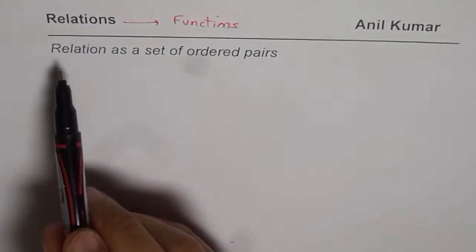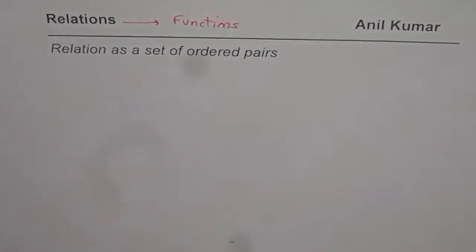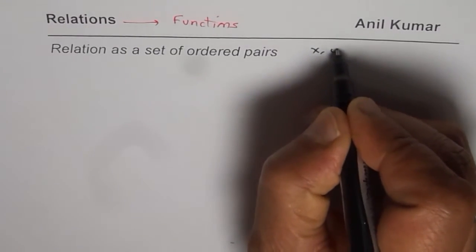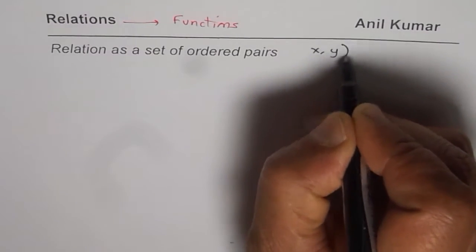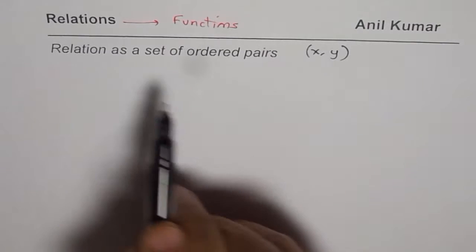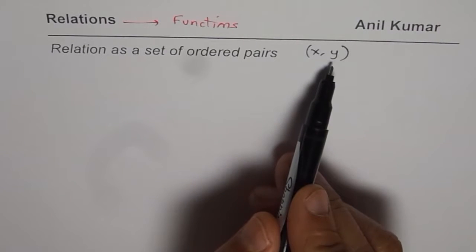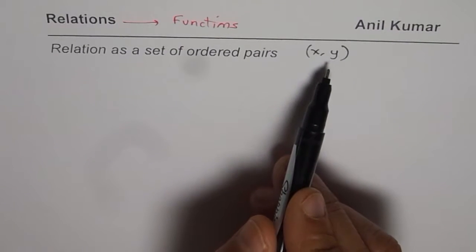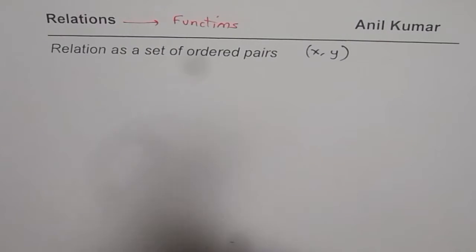As you know, relations could be represented as a set of ordered pairs. Taking ordered pairs is very important and easy. For example, an ordered pair is (x, y), and the set of these (x, y) pairs could give you a relation. From here we will try to see whether a relation is a function or not.